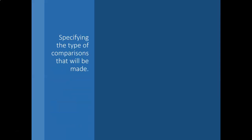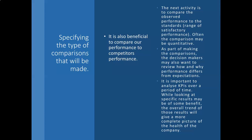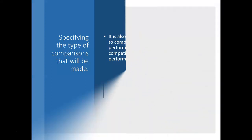Specifying the type of comparisons that will be made. It is also beneficial to compare performance to competitors' performance. The next activity is to compare the observed performance to the standard range of satisfactory performance. Often the comparison may be quantitative. As part of making the comparisons, the decision makers may also want to review how and why performance differs from expectations. It is important to analyse KPIs over a period of time — the overall trend of results will give a more complete picture of the health of the company.